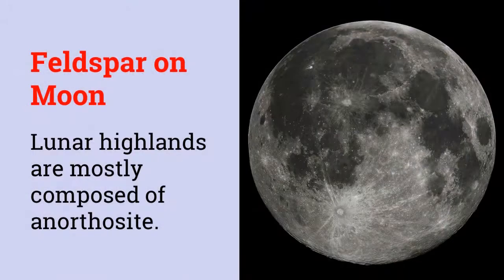Feldspar are also a common mineral in lunar surface rocks. Most of these are calcic plagioclase — AN90 to AN95 anorthite — with the mineral rocks being called anorthosite. In fact, up to 70 to 99% of the lunar highlands are composed of this plagioclase Feldspar, which in the image appears to be white.